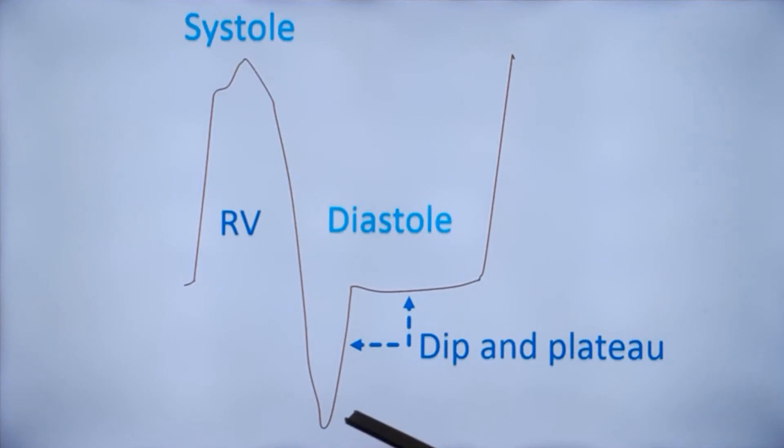When the ventricles relax, there is a rapid dip in ventricular diastolic pressure. And after filling a little, pericardial constraint sets in. This causes abrupt rise in diastolic pressure which plateaus off.